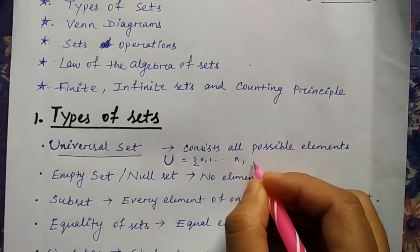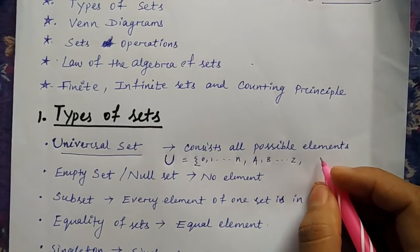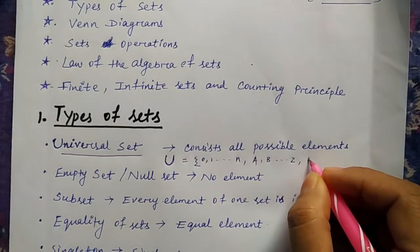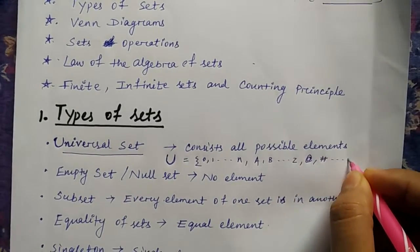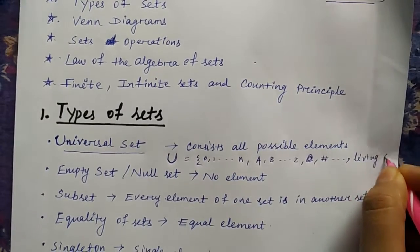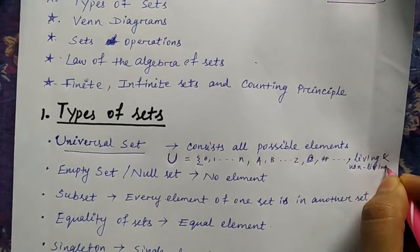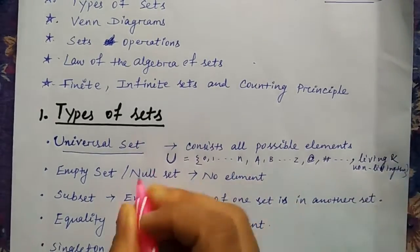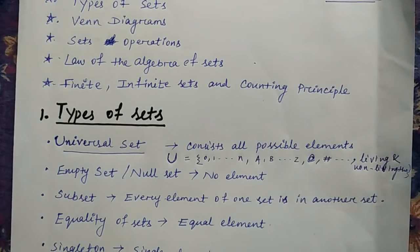This universal set is denoted as U. And this U can be any number 0, 1, 2, up to n, then a, b, c, d up to z, then all special characters, anything, all special characters, then all living and non-living things. This universal set can be anything. These are the few things I have written but it can be anything whatever you can see or feel within the world.